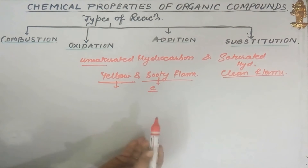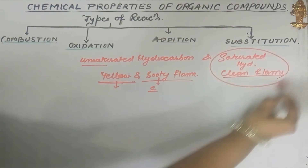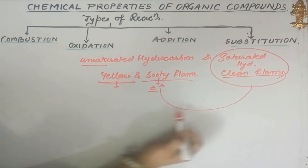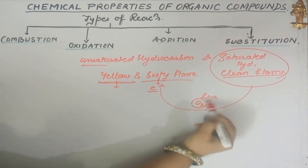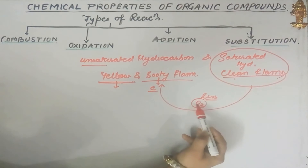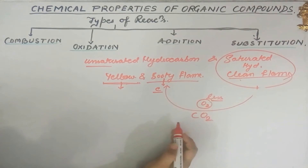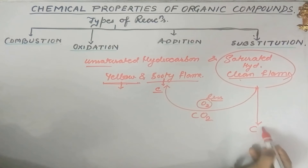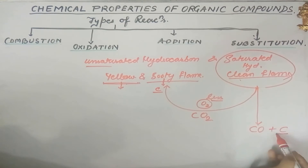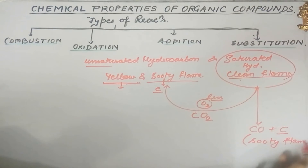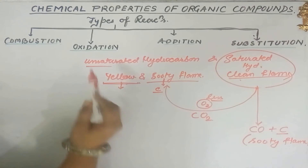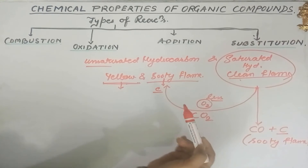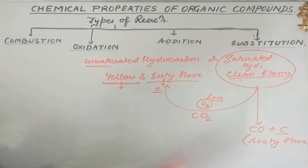You must be cautious while doing this test, because sometimes saturated hydrocarbons also burn with a sooty flame. This happens when there is a limited supply of oxygen — the saturated hydrocarbon does not get enough oxygen to form carbon dioxide, so it undergoes incomplete combustion, producing carbon monoxide and carbon particles, which leads to a sooty flame. Make sure you provide a proper supply of oxygen when confirming unsaturated hydrocarbons by flame test.